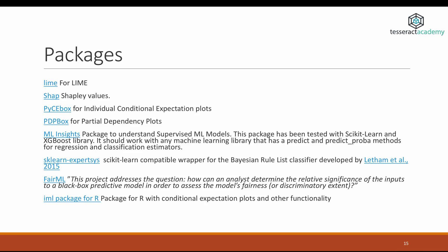In this last slide, we see some packages which we can use to run interpretable machine learning. On top of the list we have the official LIME package, and then the package SHAP for SHAP values. Then Skater, PDP and ML Insights are packages that can be used for individual conditional expectation plots and partial dependency plots. Then ExpertSys is a wrapper for a method called Bayesian Rule List Classifier, a method not covered in this video but still worth reading the paper and taking a look at.